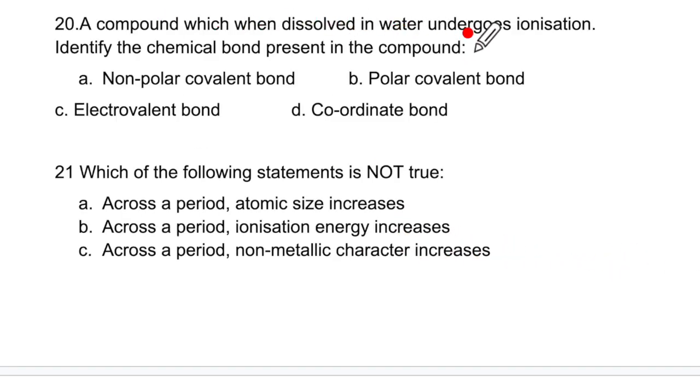A compound which when dissolved in water undergoes ionization. Identify the chemical bond present in the compound. If it undergoes ionization which means it did not have ions before, which means it had molecules. If it had molecules then it has to be covalent bond. Water is a polar solvent, so it is going to exert the pull in polar covalent bond.